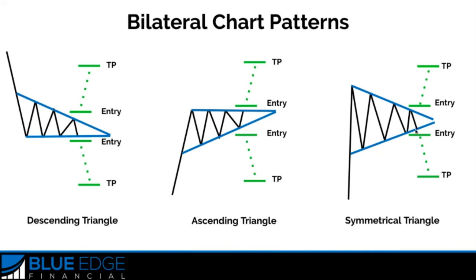For example, let's say you got in here because the market was shooting down. As soon as this order is triggered, you can place your stop loss up here above the formation. And similarly, if the price shot up and you got in here, you can place your stop loss below the triangle down here.